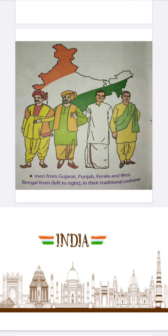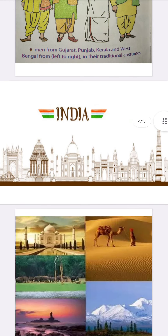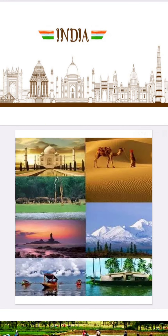What is geographical diversity? There are six main physical divisions in the country: the northern mountains, the northern plains, the great Indian desert, the coastal plains, the peninsular plateaus, and the islands.